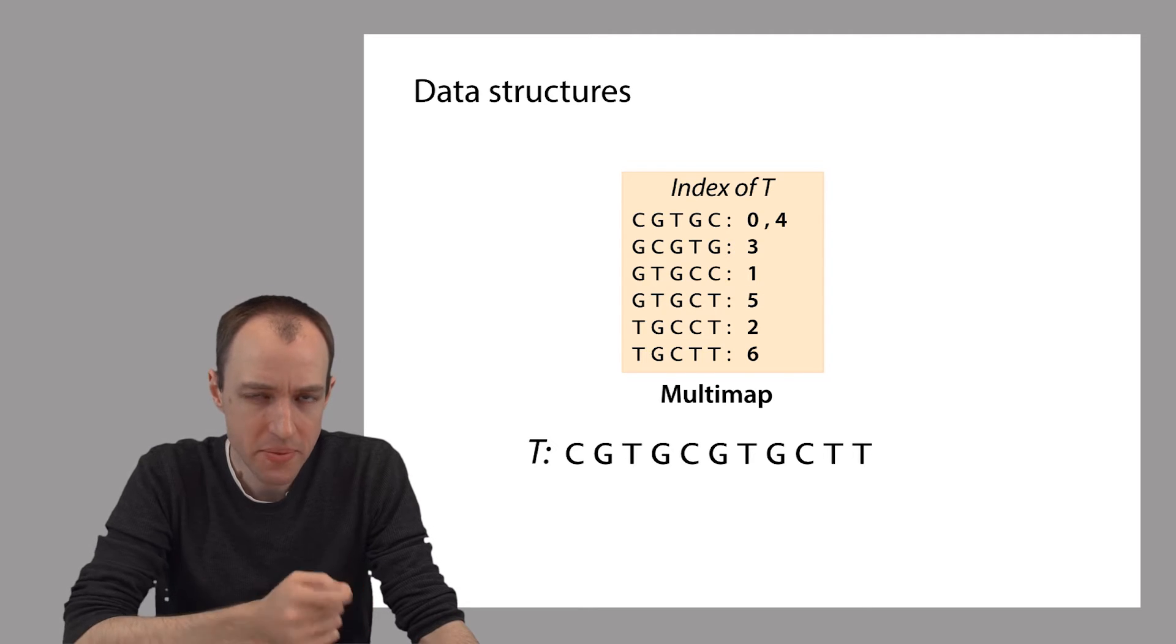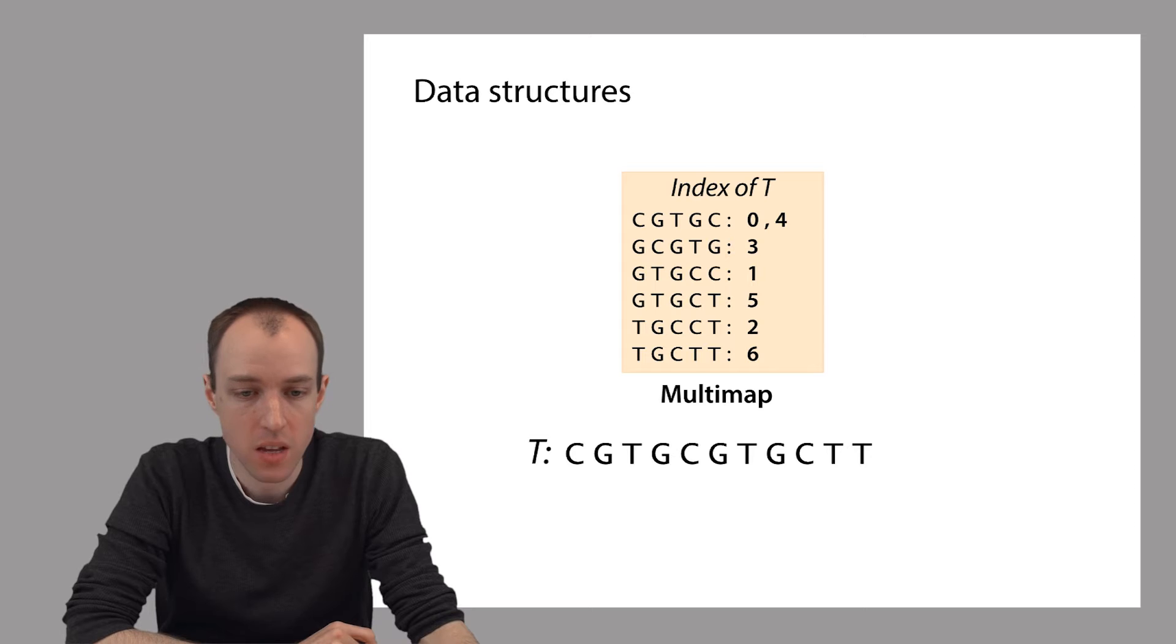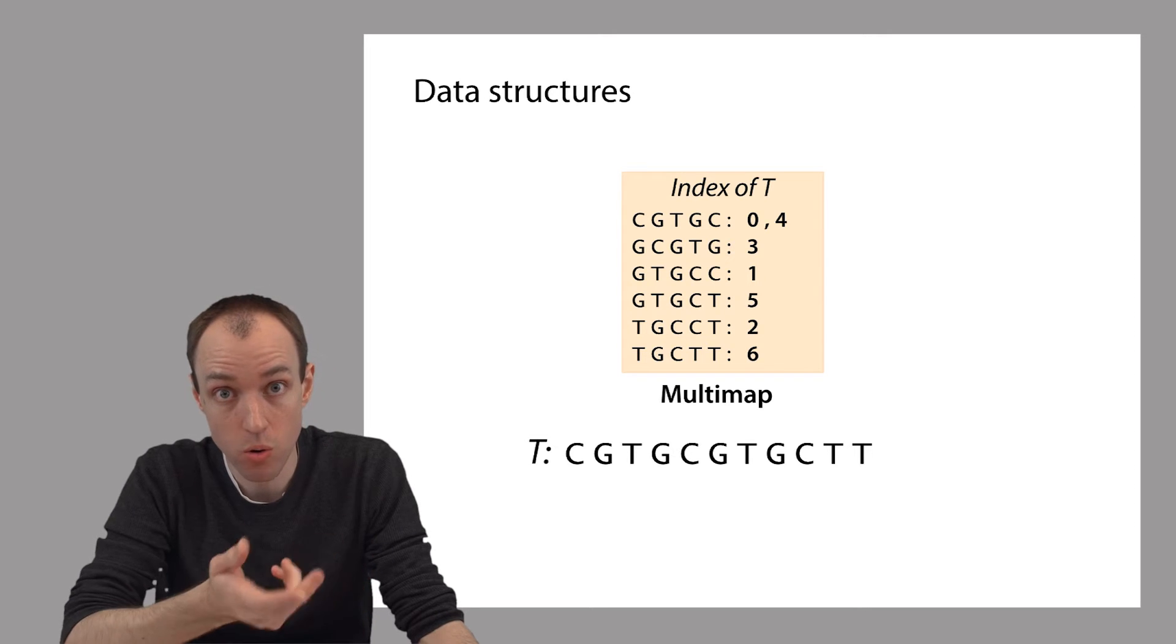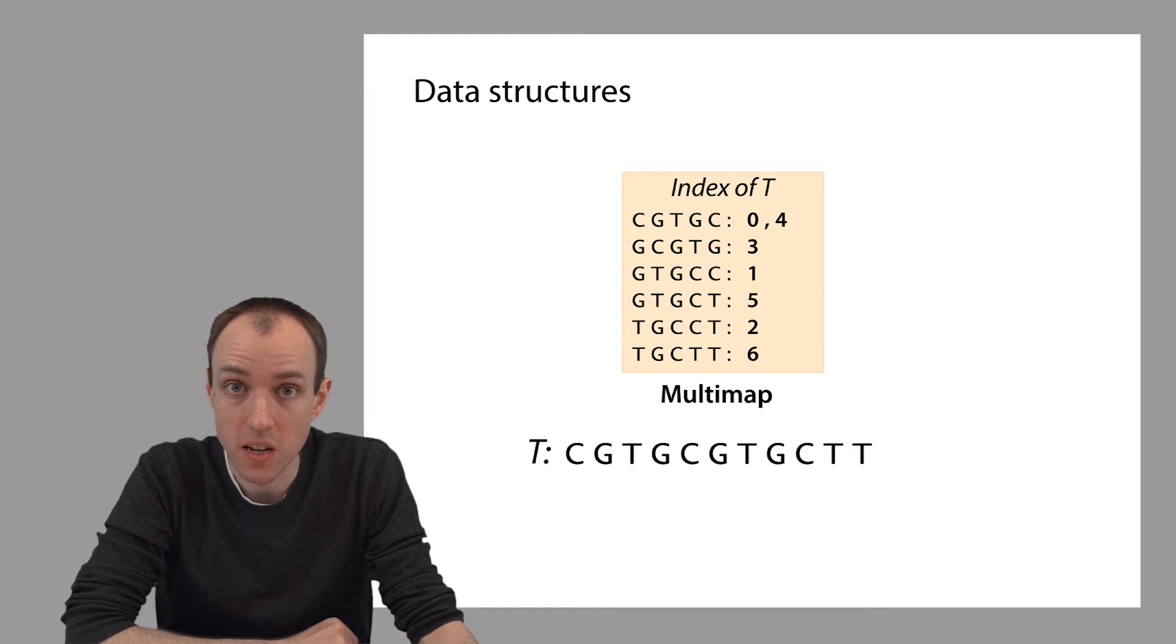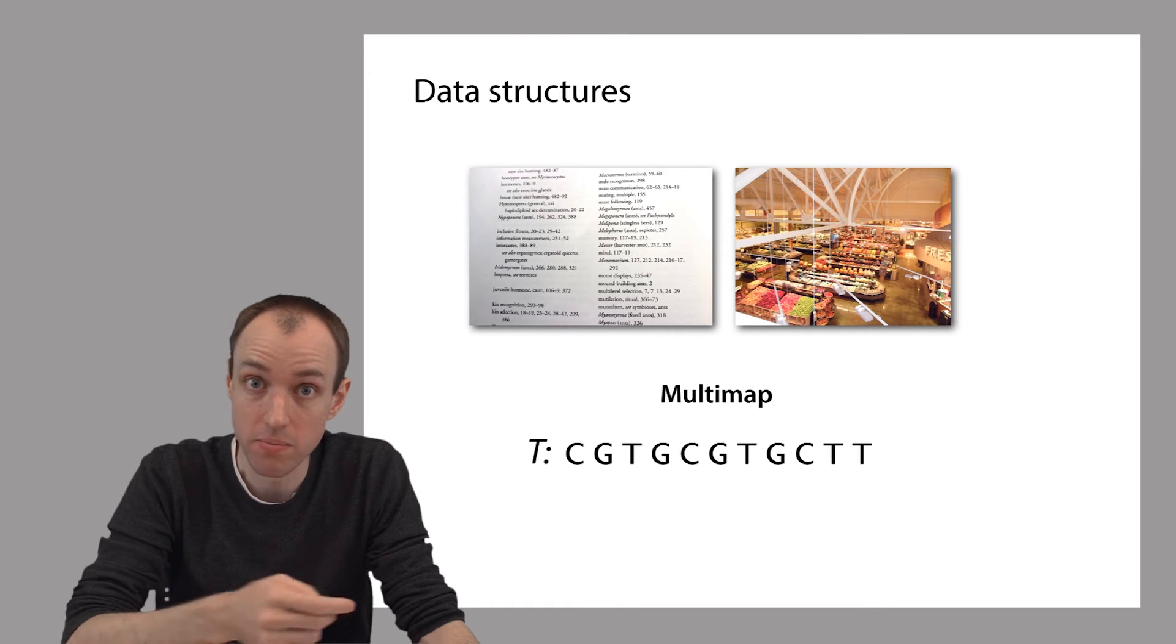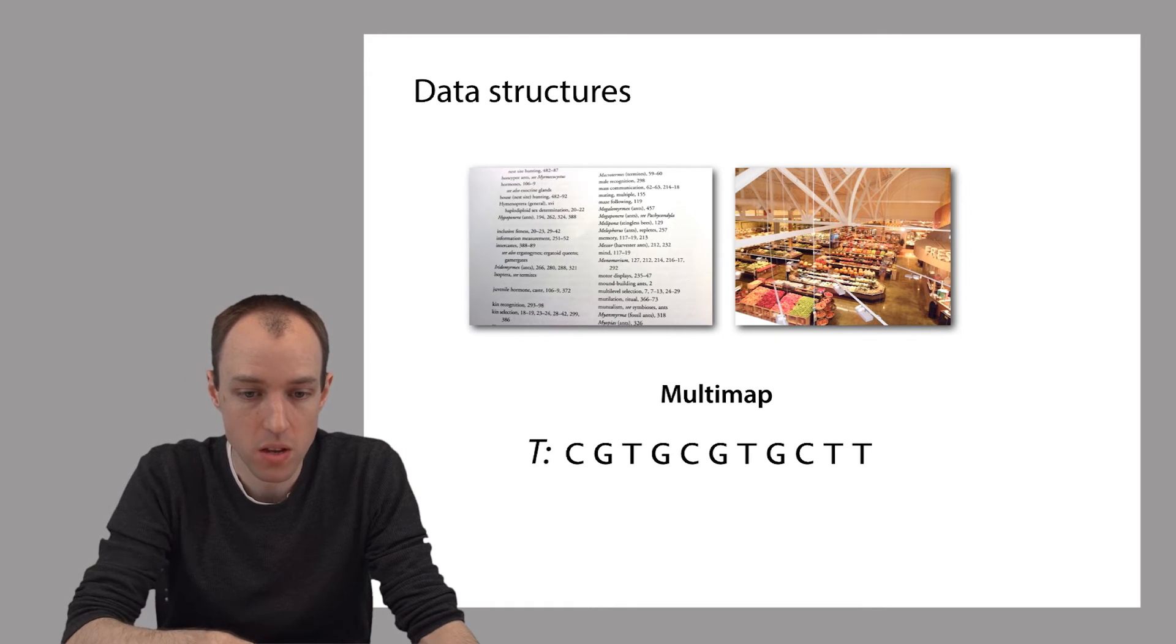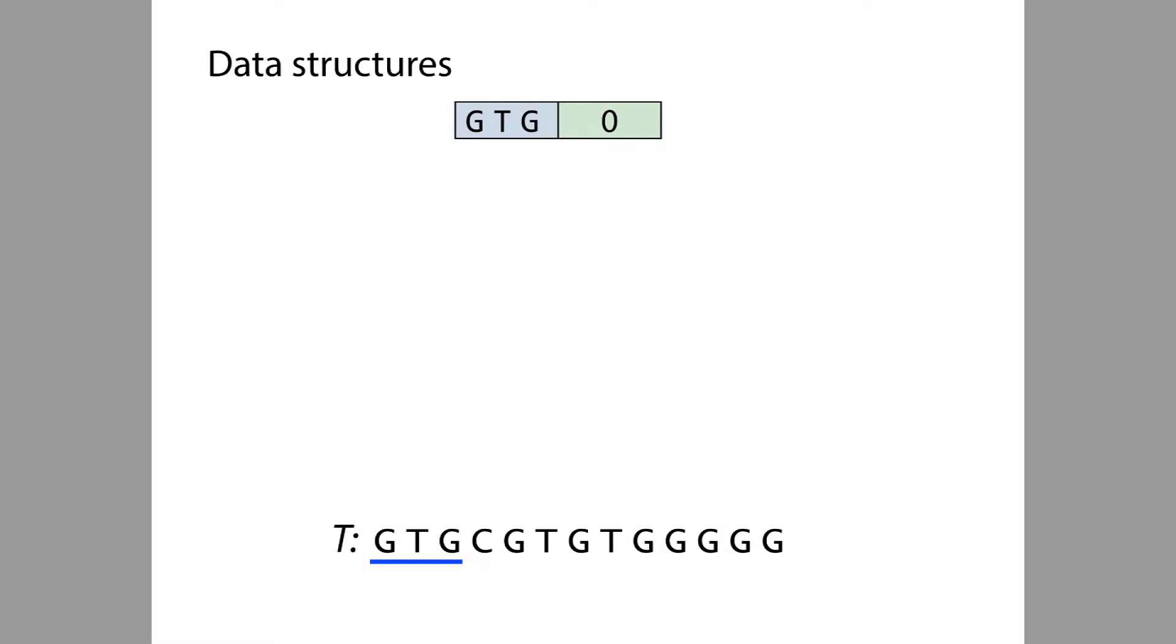So what kind of data structures can we use to implement a multi-map? We'll discuss two of them here. The first one is based on ordering, like the index of a book, and the second one is based on grouping, like the aisles of a grocery store. So let's talk about the first data structure, which is based on ordering.